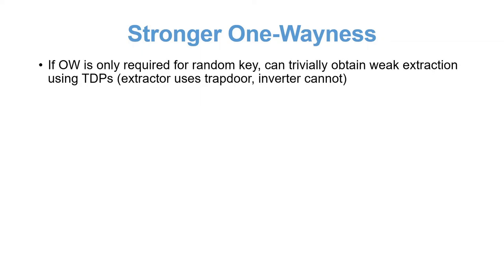Now, since we have weakened the extraction property, we have to strengthen the one-wayness. If we would require one-wayness only for random keys, then it can be trivially obtained using trapdoor permutations. The extractor will sample a permutation along with the trapdoor, and simply use it to invert every image. The inverter on the other hand, which gets a randomly chosen key, will not be able to invert.